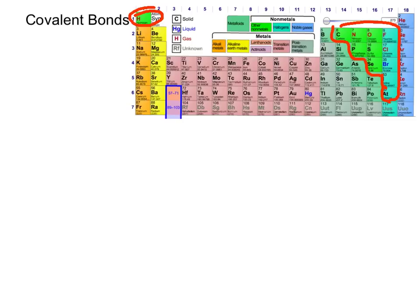We call the things that these atoms make when they come together molecules, as opposed to compounds. The properties of molecules are different than the original atoms that make them.